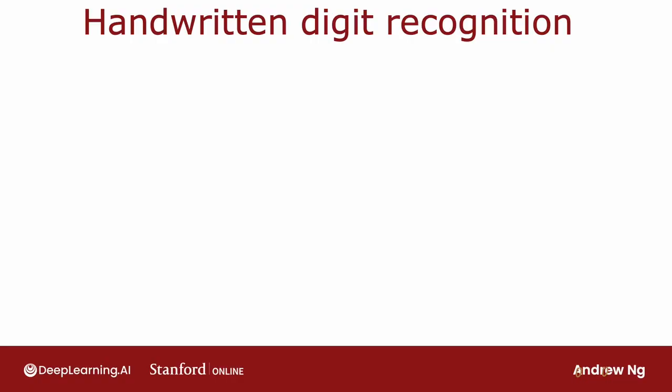I'm going to use as a motivating example, handwritten digit recognition. And for simplicity, we're just going to distinguish between the handwritten digits 0 and 1. So it's just a binary classification problem where we're going to input an image and classify is this the digit 0 or the digit 1. And you get to play with this yourself later this week in the practice lab as well.